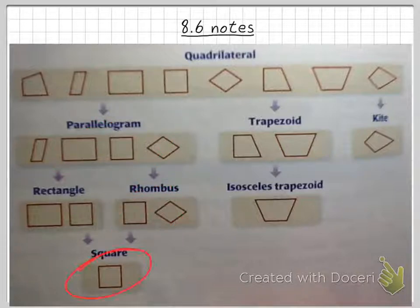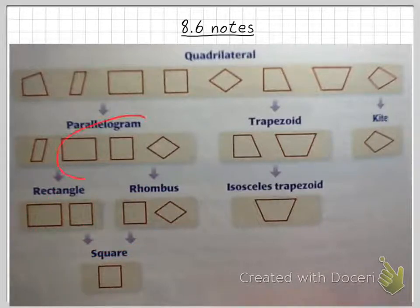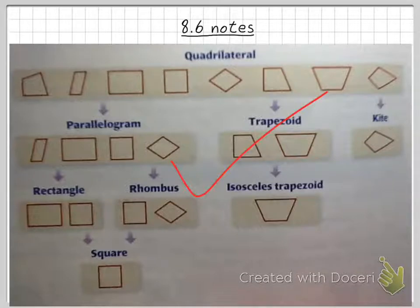Going down even further and becoming more specific is a square. A square is a parallelogram with four congruent sides and four right angles. Keep in mind that all squares are both rectangles and rhombuses, and all rectangles and rhombuses are parallelograms. Of course, they're all quadrilaterals — everything on this chart is a quadrilateral.